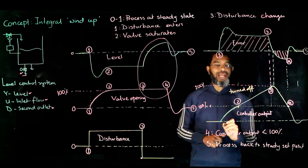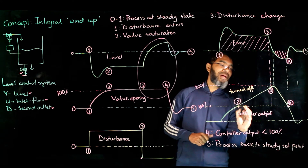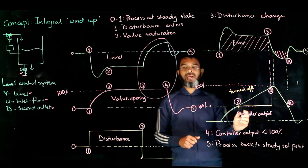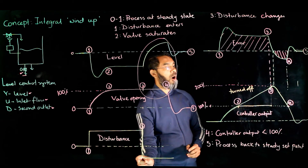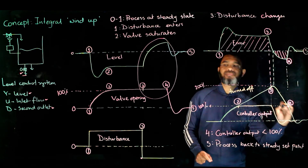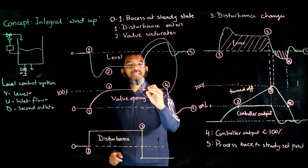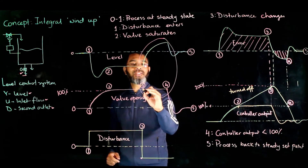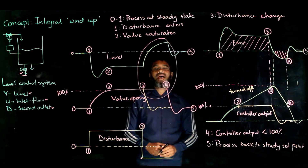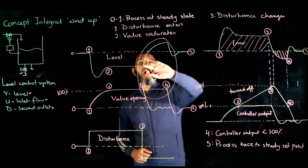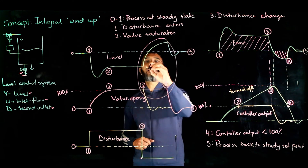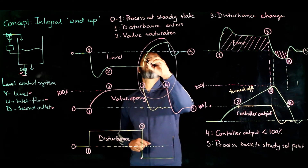To get rid of the windup, the integral action is turned off, meaning the value remains at 100%. In that scenario, whenever the disturbance moves in the opposite direction, the controller would be able to take action. The valve would start closing at instant 3, and the output would not go beyond the desired value but would instead stabilize around the set point.